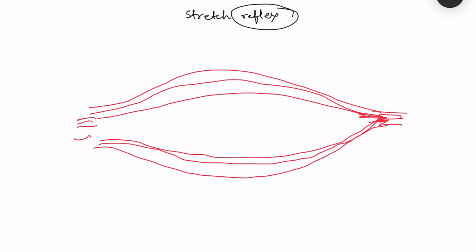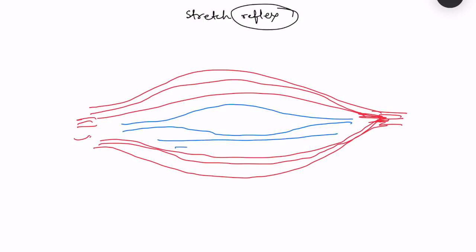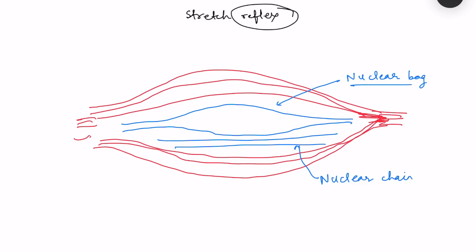All skeletal muscles have a sensory component as well — that is the muscle spindle. In the center of the skeletal muscle there is a sensory component, the muscle spindle, and it has two types of fibers: nuclear bag fibers and nuclear chain fibers. These are the receptors for the stretch reflex. Remember there are two components of nuclear bag fibers — static nuclear bag fibers and dynamic nuclear bag fibers.